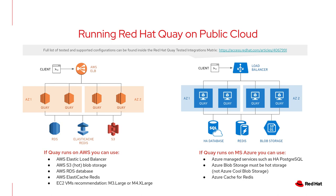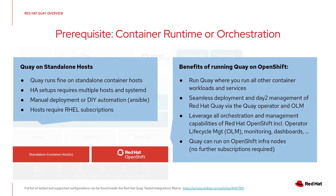Nearly the same applies to all other infrastructure — we just picked two of them. The other one is Azure, and again use the public cloud services for database and storage if you run it on public cloud. There is a very detailed overview of all the different components and infrastructure backends we test against, which are called out in the Quay tested configurations matrix in the Red Hat customer portal.